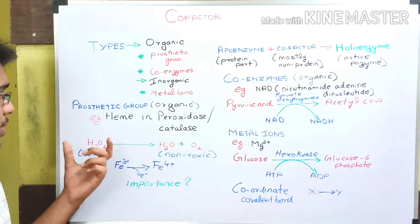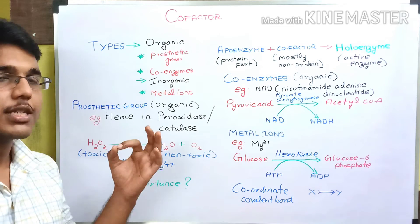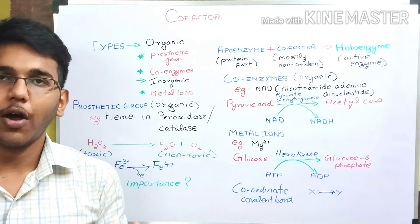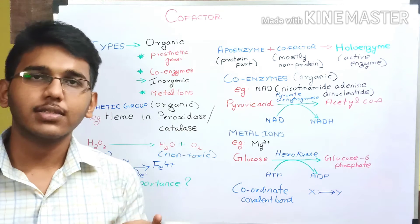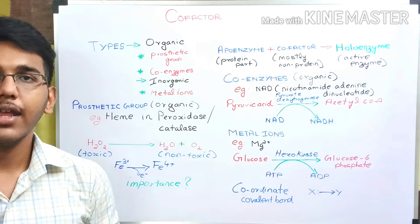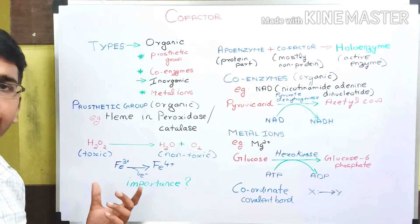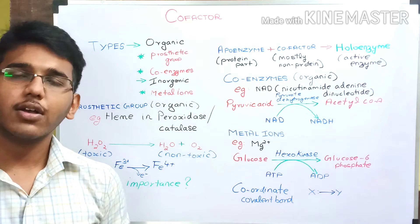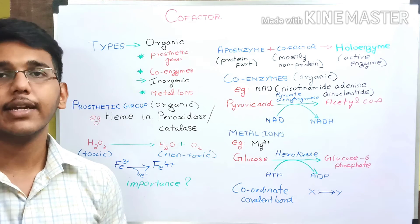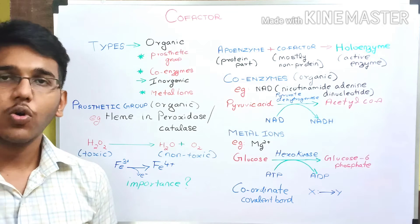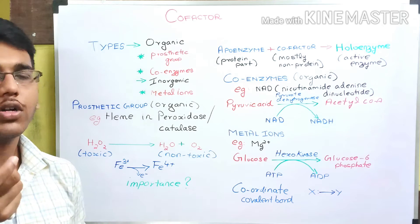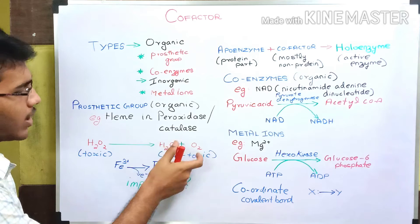This reaction happens because hydrogen peroxide must be converted to non-toxic form. This hydrogen peroxide is produced in our body as a result of the oxygenic environment of our body. But this hydrogen peroxide is a toxic compound because it may cause mutation in our genetic material, that is DNA. So this has to be converted to a non-toxic form, that is water and oxygen.